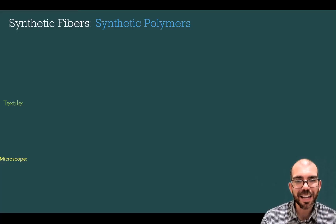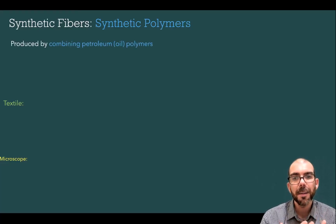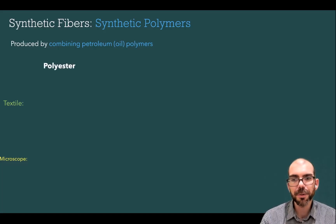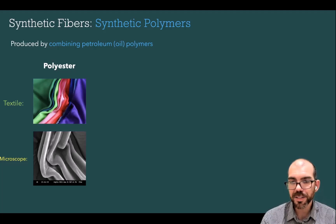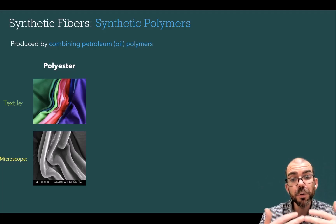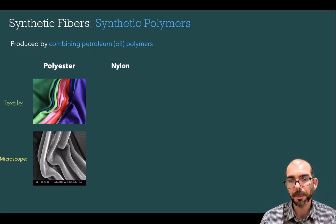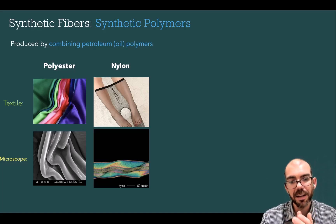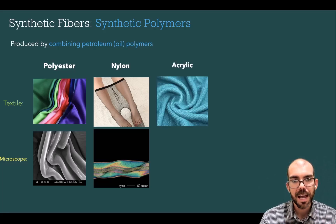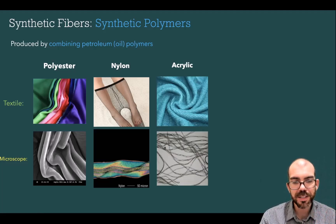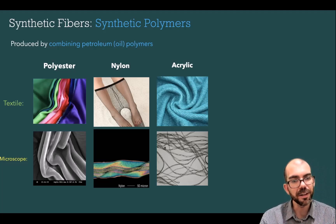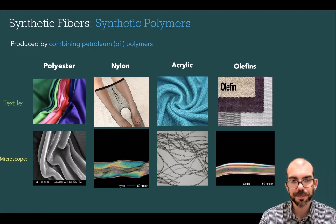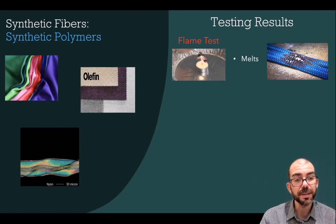The last fiber type is synthetic polymers, made entirely by combining petroleum or oil polymers — manufactured and not found naturally. Some examples: polyester is a very commonly used synthetic polymer; under the microscope you can see bends in the fabric, but notice how smooth those fibers are — smoothness is unique to synthetic fibers. Nylon is another common one, often used in clothing products, and under the microscope it also shows that characteristic smoothness. Acrylic is very common in fabrics — under the microscope it's a lot stringier than nylon or polyester, but still smooth. Olefins are also used. A flame test will cause synthetic polymers to melt, and an acid test will dissolve nylon but not the other synthetic fibers.